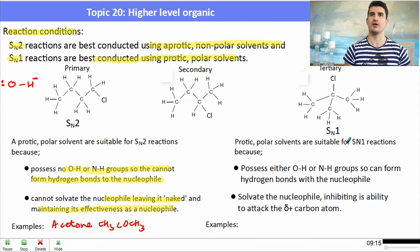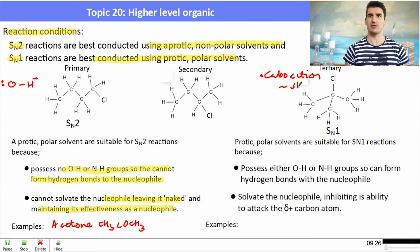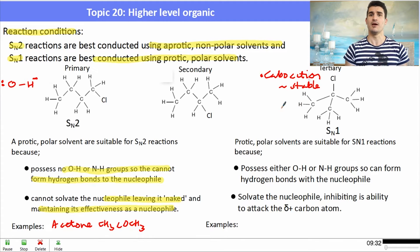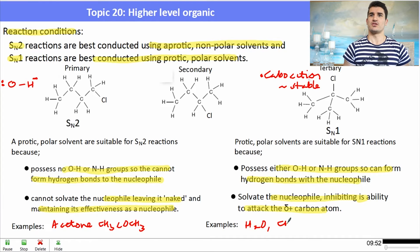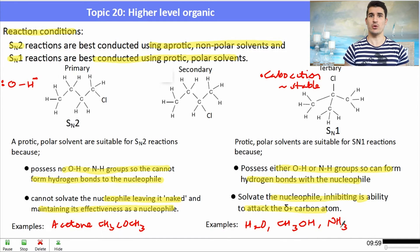For SN1 reactions, we want a polar protic solvent — one that contains an OH or NH bond and can form hydrogen bonds with the nucleophile. This keeps the nucleophile solvated so it does not attack the tertiary halogeno alkane prematurely; once the carbocation forms, the nucleophile is then able to attack it. Good examples of polar protic solvents are water, ammonia (NH₃), or methanol.